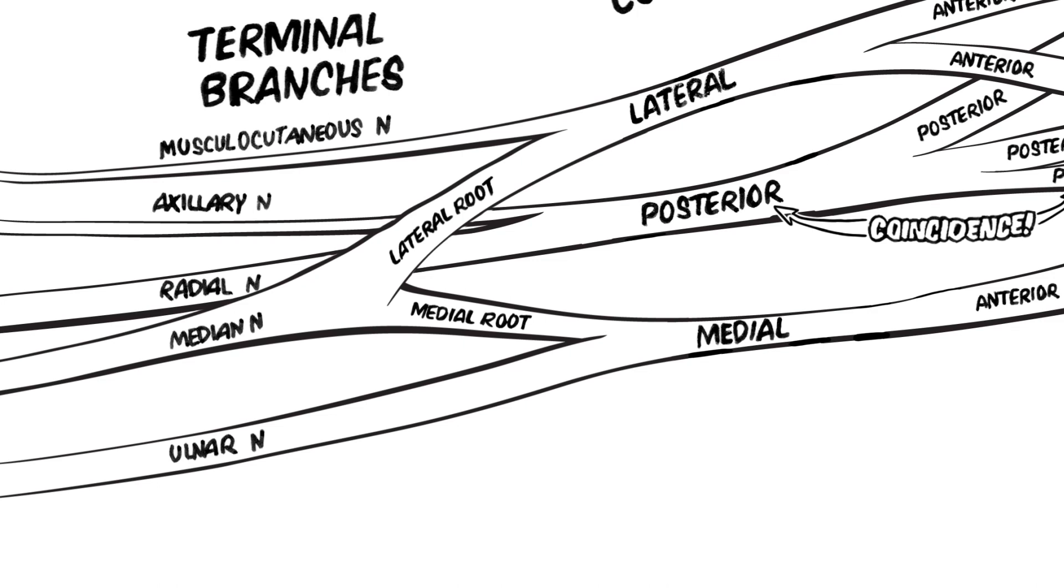The terminal branches of the lateral and medial cords form the characteristic M-shape anterior to the axillary artery, which is usually the most distinctive feature of the brachial plexus and serves as a reference point for locating and identifying the other components of the plexus.